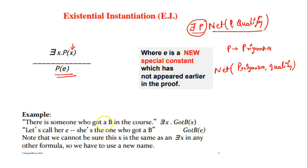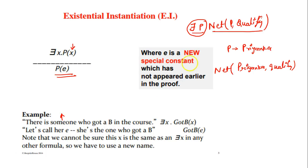Consider the example: 'There is someone who got a B in the course.' This means there exists at least one person x such that GotB(x). After existential instantiation, you put a constant in place of x — say, a girl — and you can simply write GotB(her). You are putting a constant value in place of the variable and removing the existential quantifier.